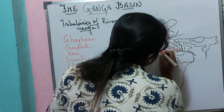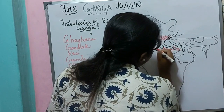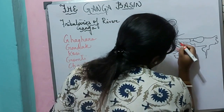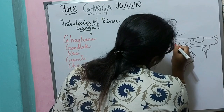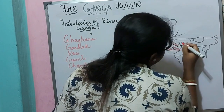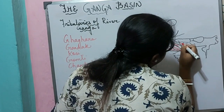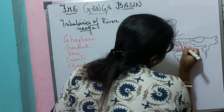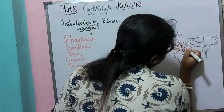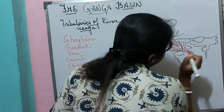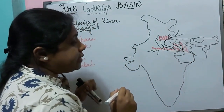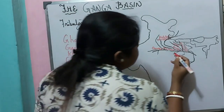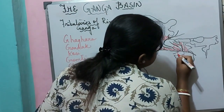On the map we can see: this is the Chambal, here is the Gomti, here is the Ghaghra, and here is the Gandak. One more tributary joins the river Ganga near Patna — that is the Son river.